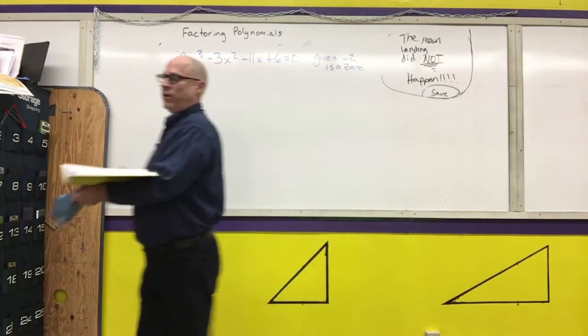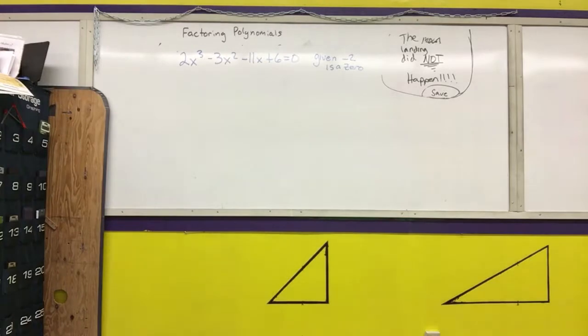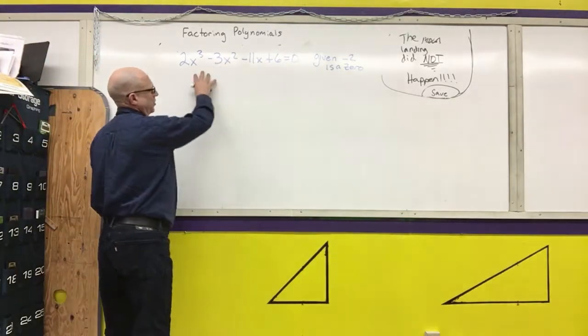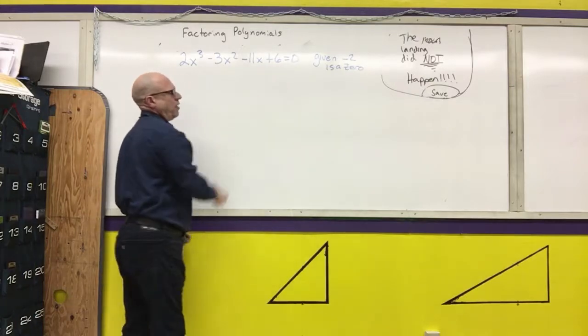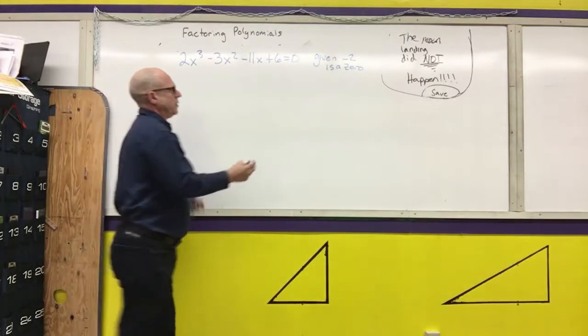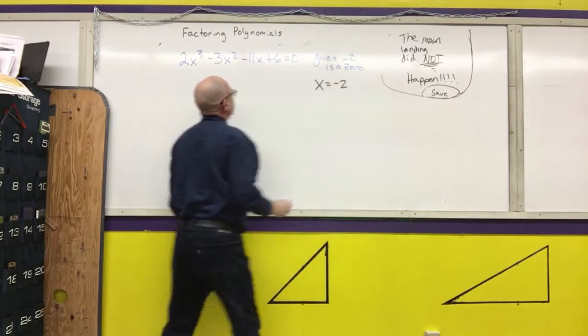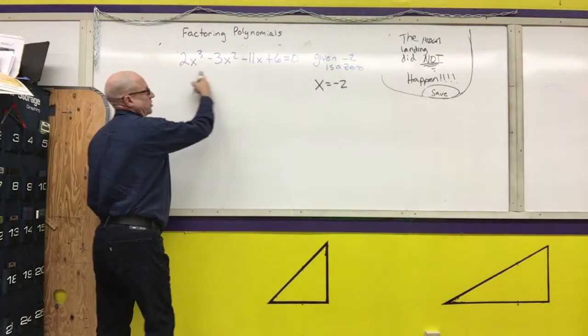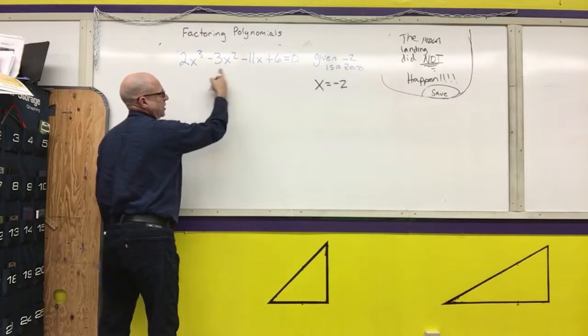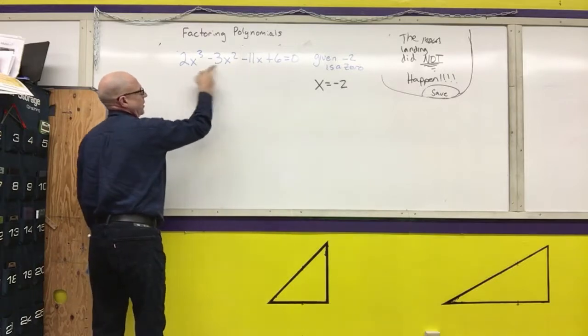So I already have one of my solutions, and that is negative 2. I'm going to use that solution to turn this cubic polynomial into a quadratic polynomial that I can factor. So my solution so far, x equals negative 2. I'm going to do synthetic substitution slash synthetic division. Copy my coefficients.